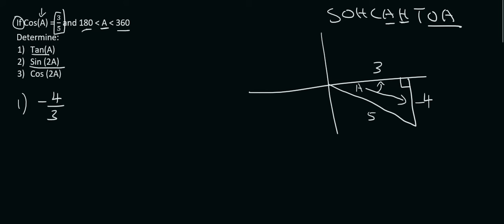Sin of 2A. Now please, I've seen people do this so many times. They simply work out the sin of A, and then they just times it by 2. Now sin of A is easy because this angle is A, but that is not how this works.